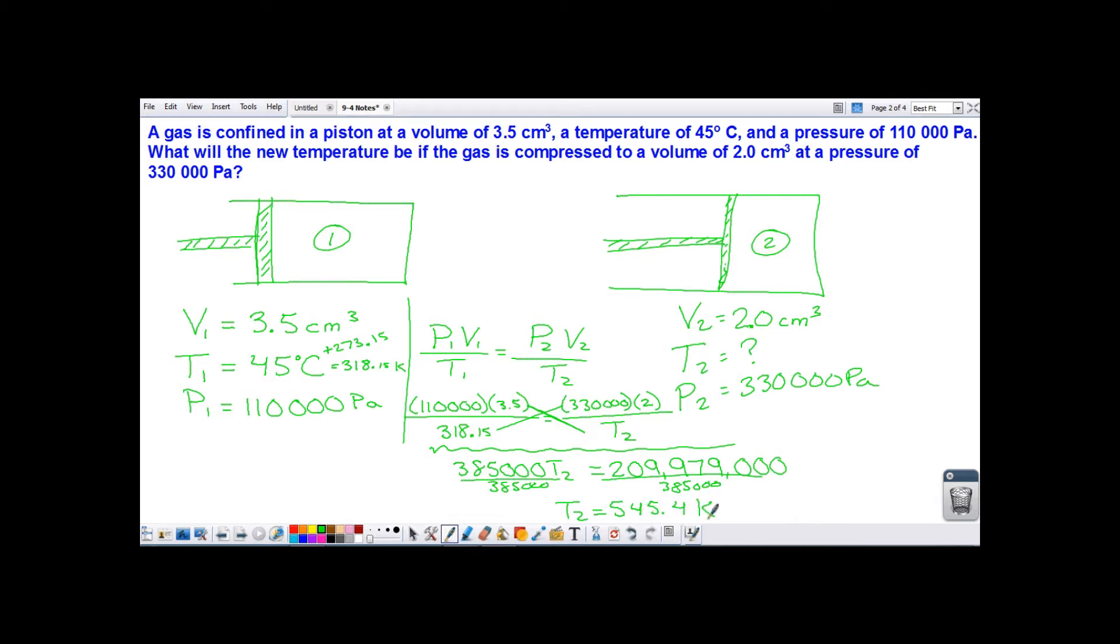And if I want, I could go ahead and convert that back to Celsius simply by subtracting 273 and 15 hundredths. And in that case, I would get 272 and 25 hundredths degrees Celsius. The problem just says what's the temperature, doesn't say which units, so either one would be okay.